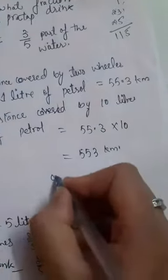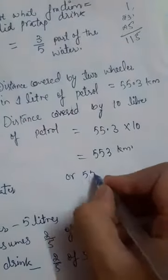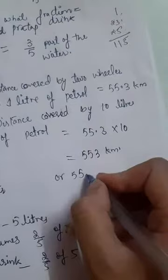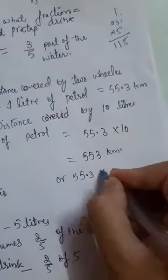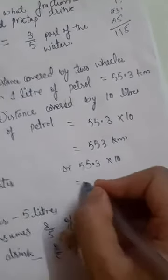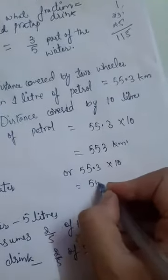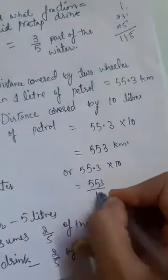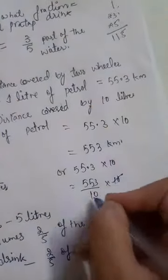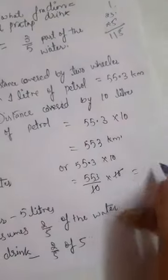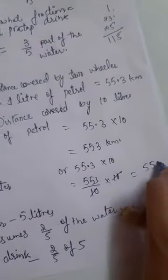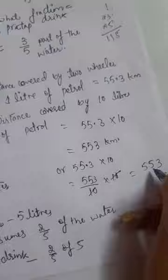Now, how do you multiply it? 55.3 multiplied by 10 which equals 553. 10 multiplied by 10 and 10 will be cancelled. So the answer is 553.